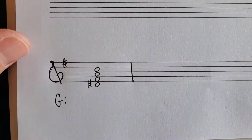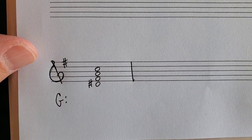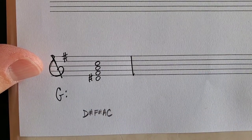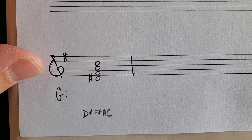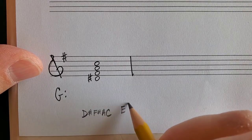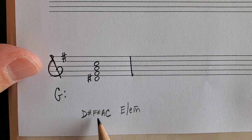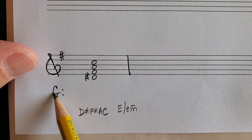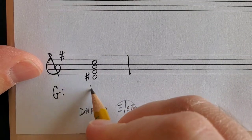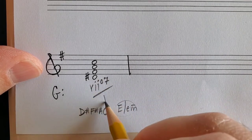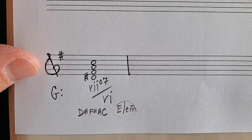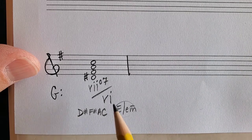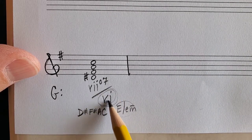Next one in the key of G: the chord is spelled D#, F#, A, C — already in root position. Where is D# the leading tone? D# is the leading tone in E — either E major or E minor. In the key of G, E is VI. VI is minor in a major key. So this is viio7/vi. Always make sure the bottom part of the secondary leading tone chord is diatonic to the key you're in.